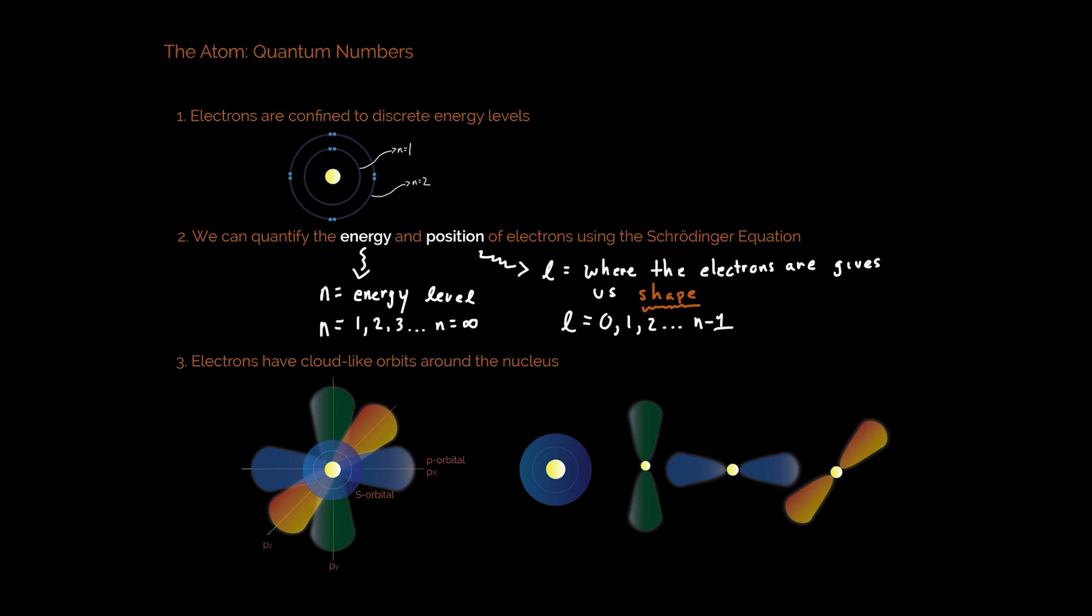And even though I say that quantum theory and classical theory agree on this, you're going to see in points two and three how this particular solar system model is not at all what an atom actually looks like. But you will see this model time and time again simply because it does a great job of showing that electrons are confined to discrete energy levels.